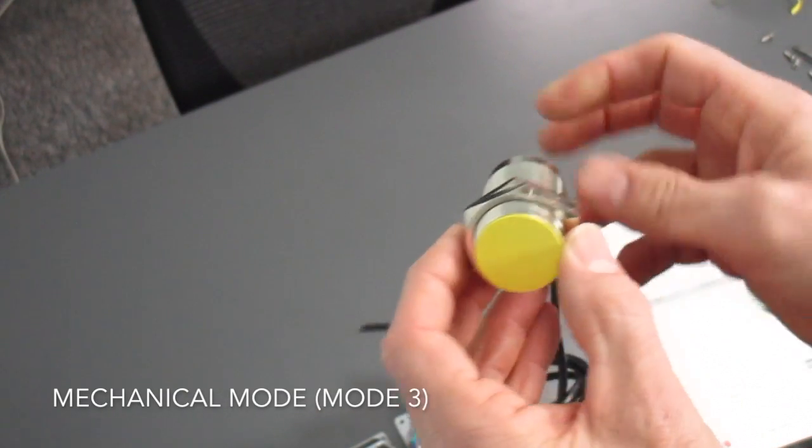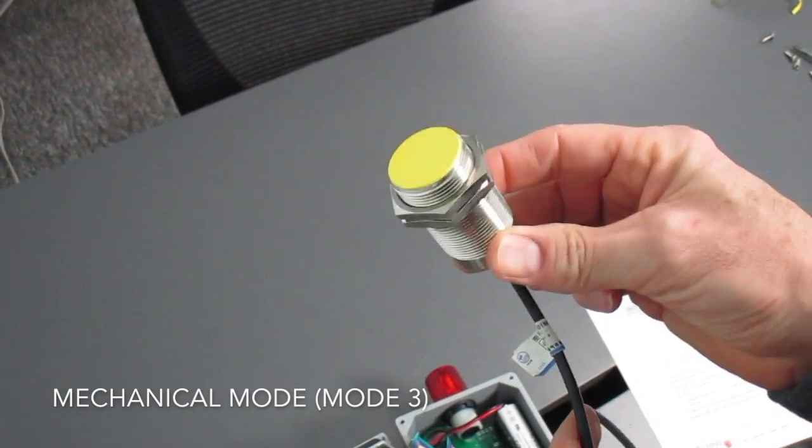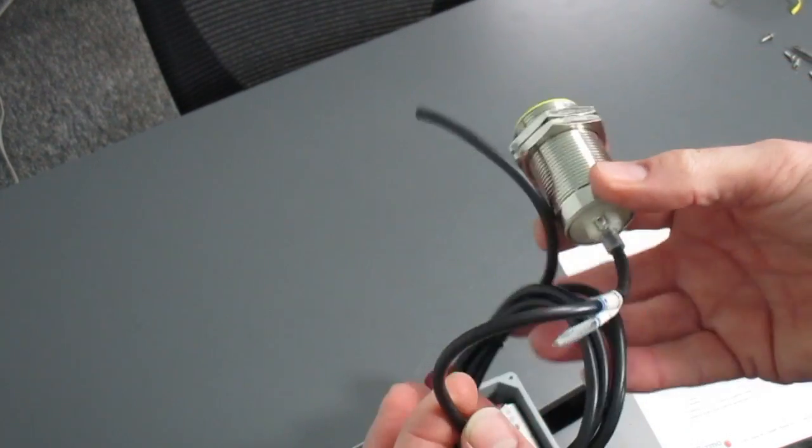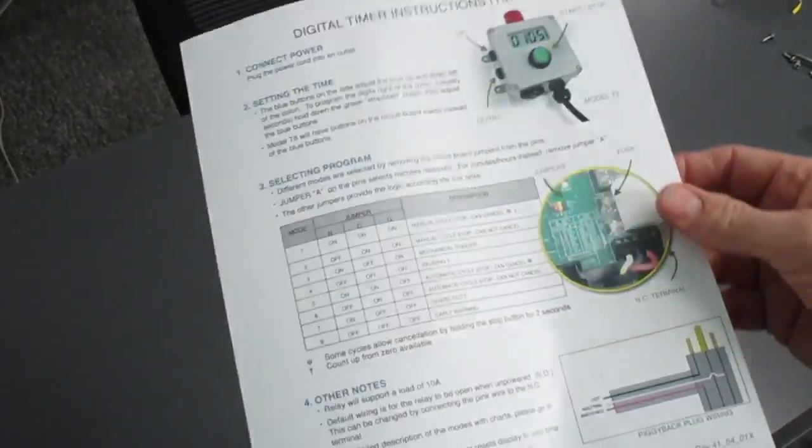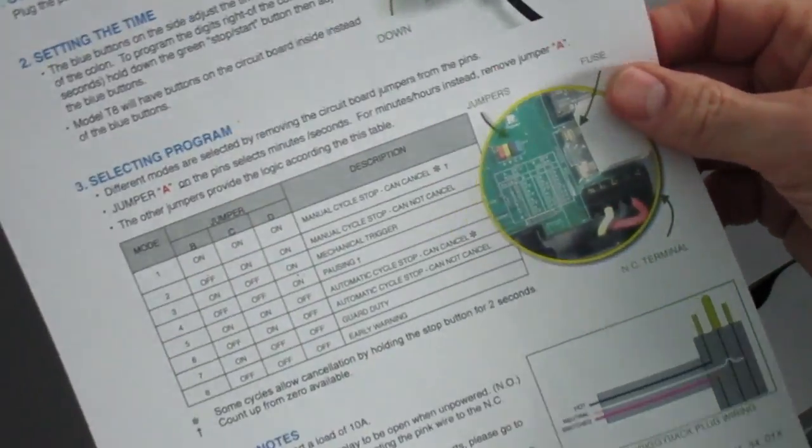The mechanical trigger, that's really for line power devices which might use a proximity sensor like this to sense a rack on a plating line. For the battery powered unit we're not going to worry about that.